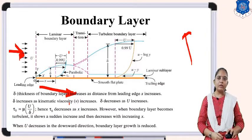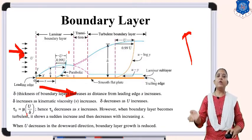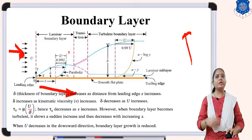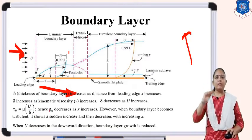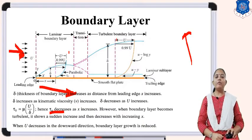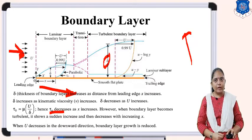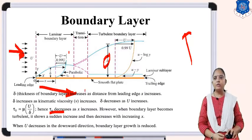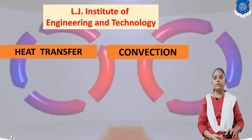Delta also increases as kinematic viscosity mu increases. Delta increases with a decrease of velocity — the height of the boundary layer decreases with an increase of velocity, or vice versa. Shear stress tau on the boundary layer equals mu times du/dy. Here u is velocity and dy is the vertical height delta, so u/delta. Hence tau₀ decreases with increasing x. When the boundary layer becomes turbulent, it shows a sudden increase in the vertical height delta. When u increases in the downward direction, boundary layer growth reduces.